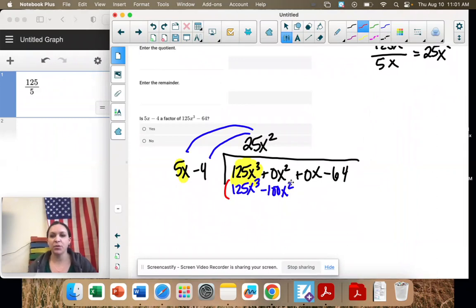So let's subtract both terms. What happens to the signs? This becomes negative, and then the negative becomes a positive. That cancels out, and we have 0 plus 100. 100x², and bring down the 0x.